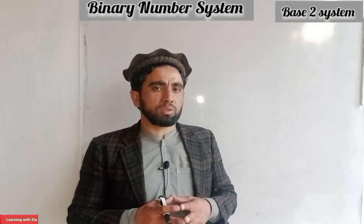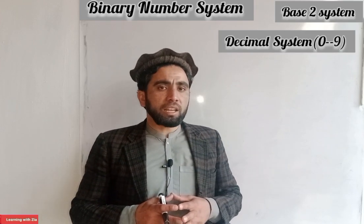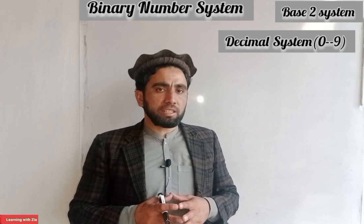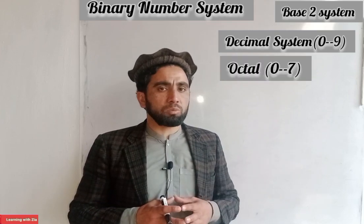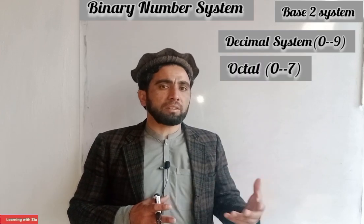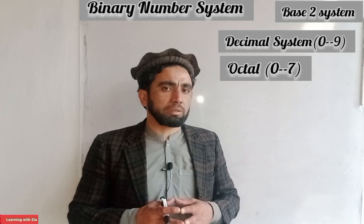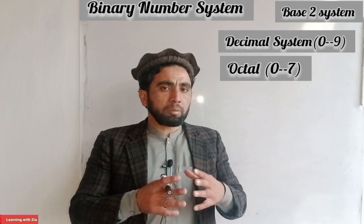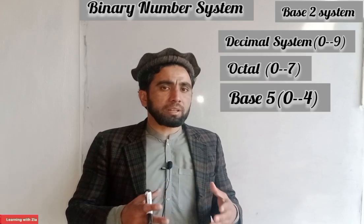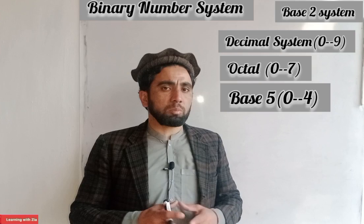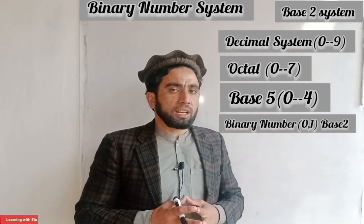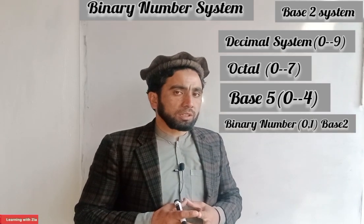The decimal system is based on the numbers 0 through 9. Those numbers intersect at scales of 7, 8, 9, and then those numbers are based on the system. The binary number system is based on what is shown at 1.